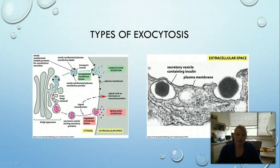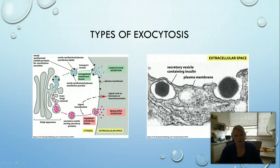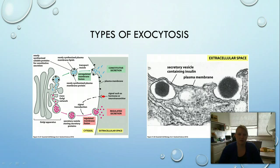Once proteins are released from the Golgi, they head towards the plasma membrane. There are two types of release: regulated membrane fusion, where a signal indicates when vesicles should fuse and release — insulin is an example, since we don't want to release it all the time but wait for a high-glucose signal — and unregulated membrane fusion, where the transport vesicle automatically goes to the plasma membrane and fuses. Which pathway is used depends on the contents of the vesicle and its purpose.